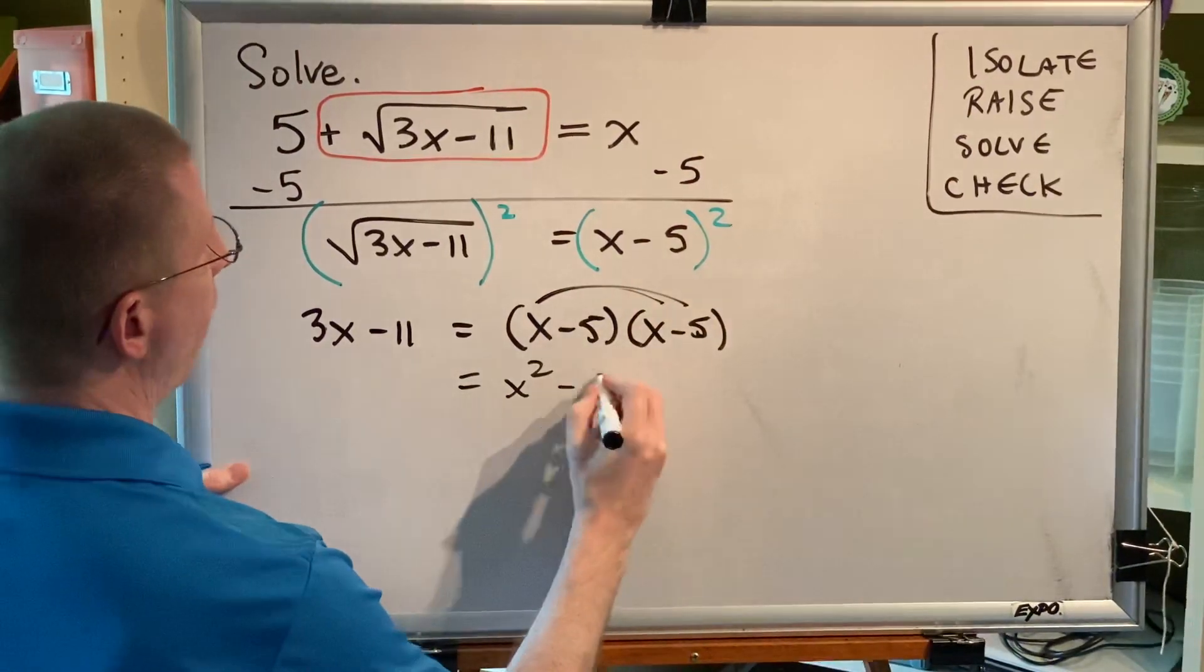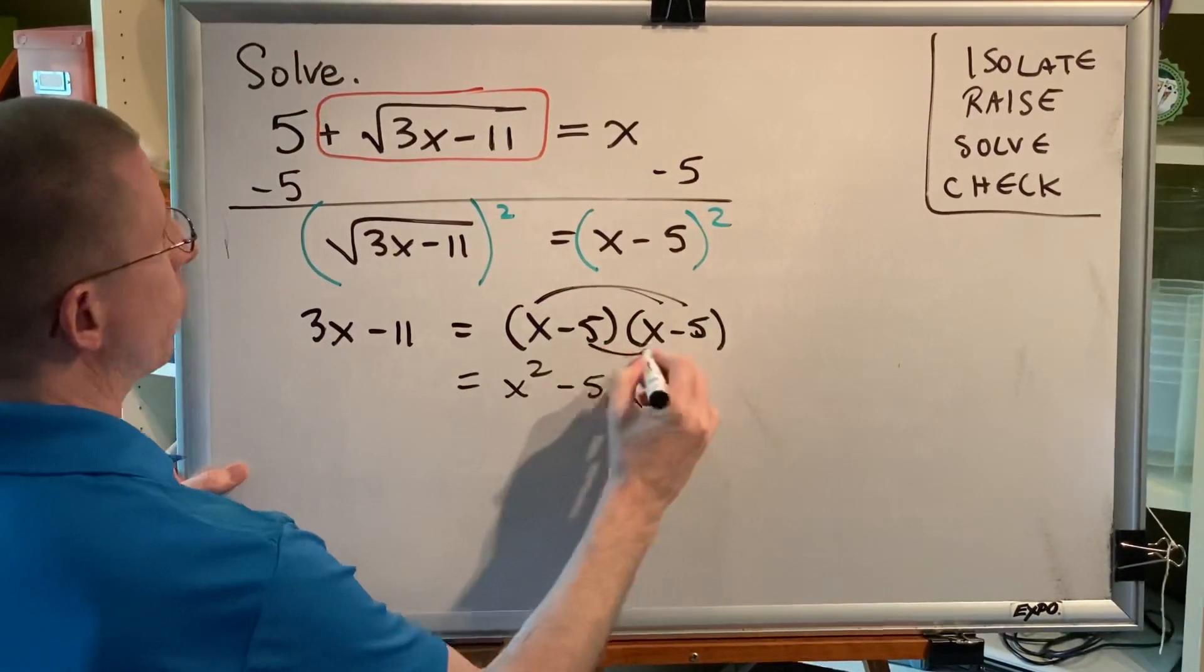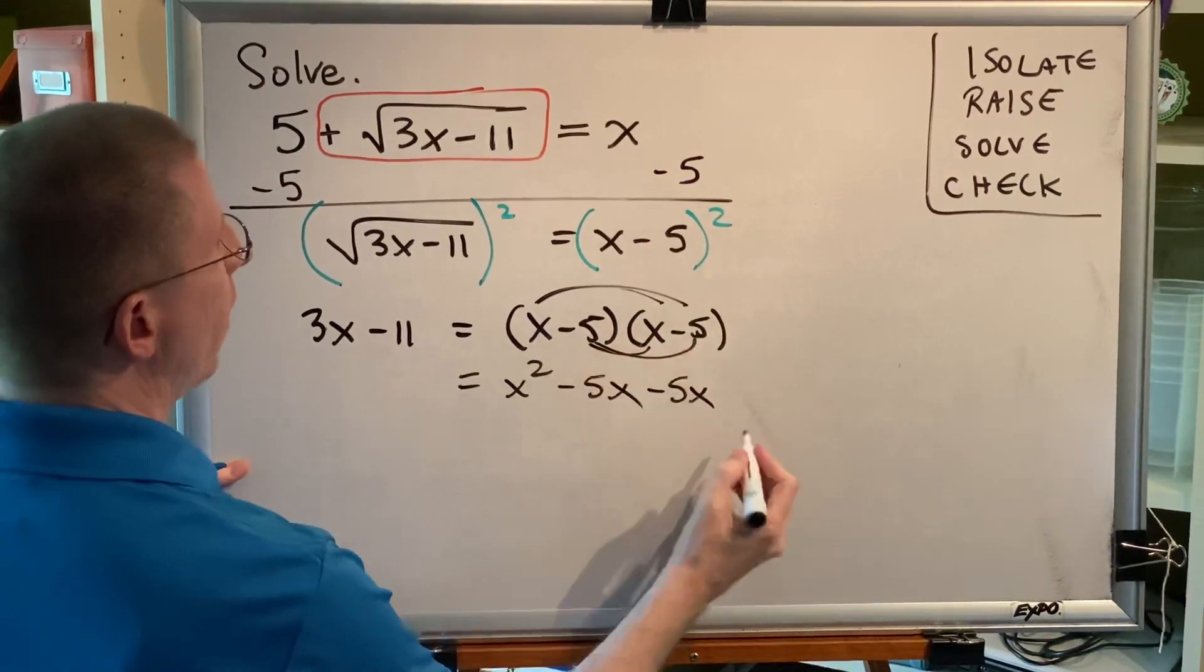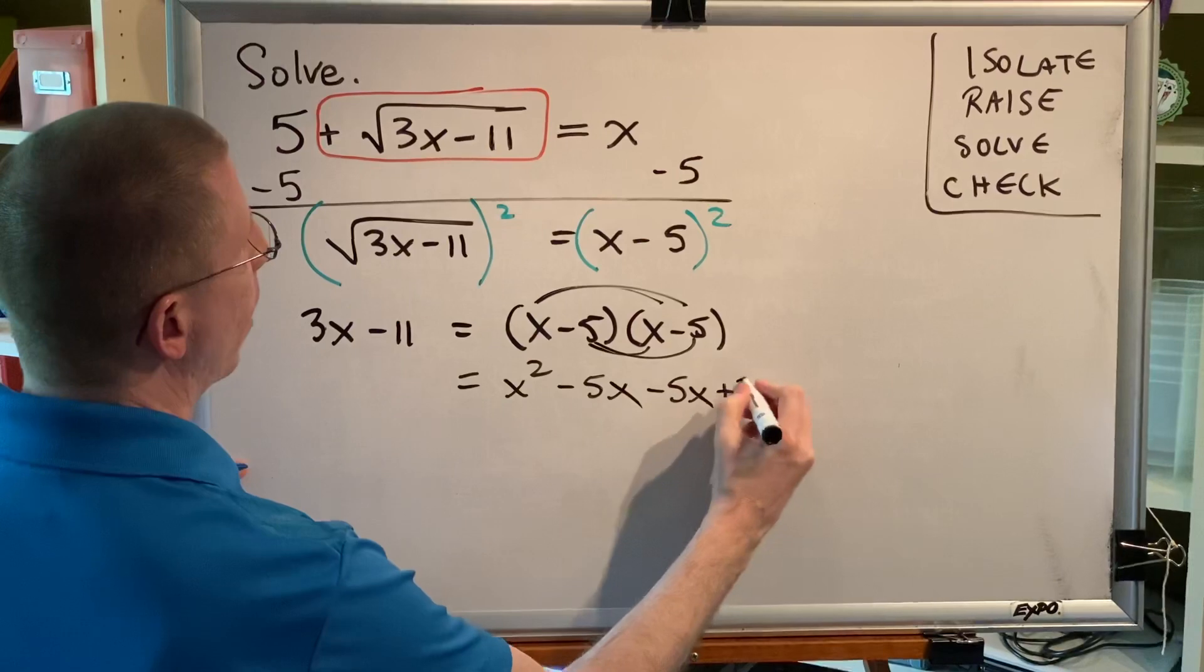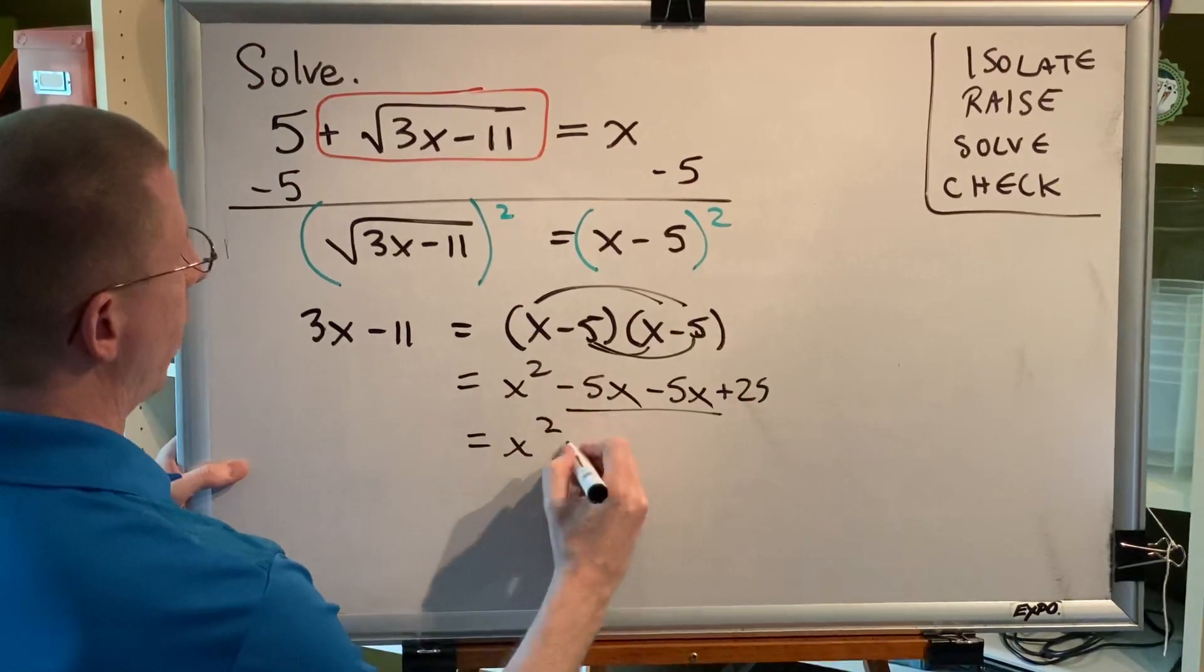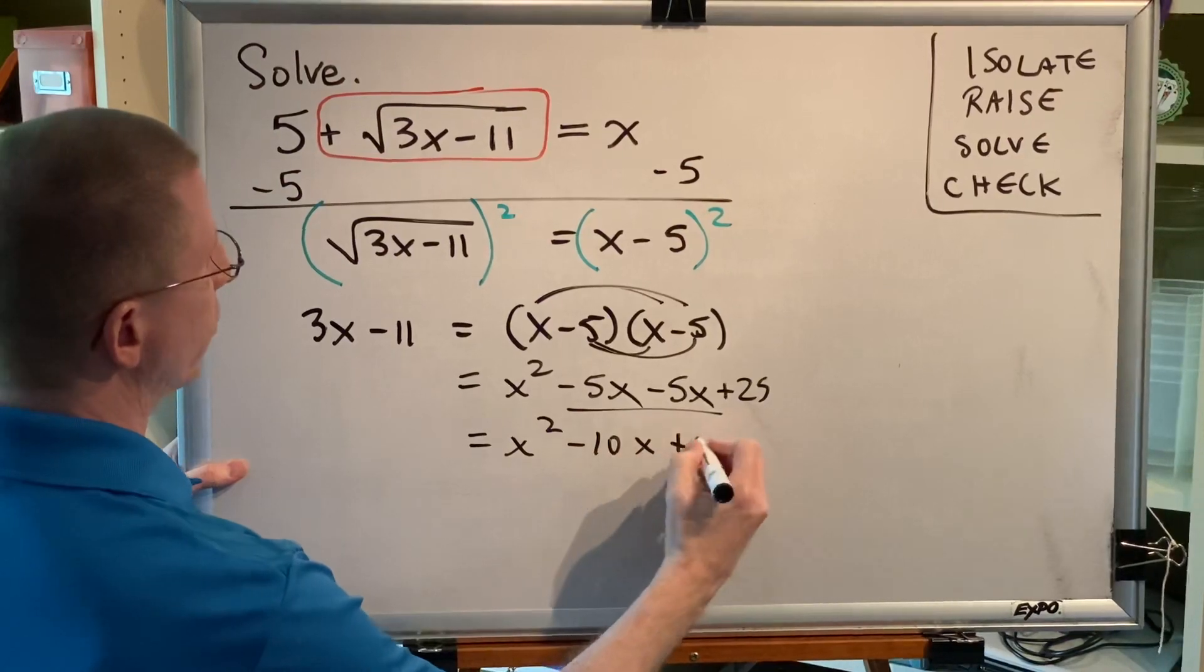So x times x is x squared. x times subtract 5 is minus 5x. Subtract 5 times x is minus 5x. And subtract 5 times subtract 5 makes plus 25.